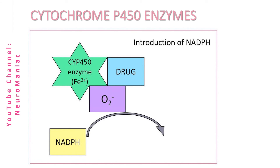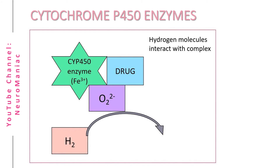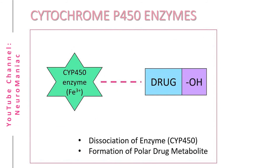Another NADPH is required and is oxidized, transferring its electron to the oxygen atom. Two hydrogen atoms then interact and form water with one of the oxygen molecules from the complex. Lastly, the enzyme separates as favorable conformations have formed between the drug and oxygen. The CYP450 enzyme is released in its default ferric state, and a polar functional group — i.e., a hydroxyl group — has been added to the drug, making it more water-soluble and able to be excreted via the kidneys.